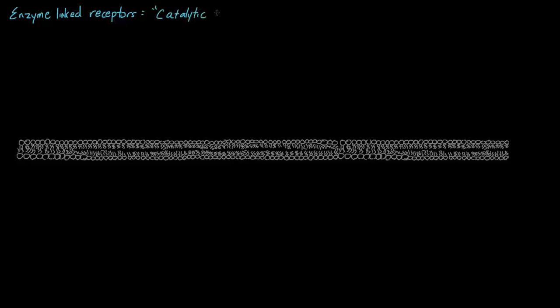So over here, I've pre-drawn a picture of our cell membrane — our phospholipid bilayer. Up top, I'm going to say this is our extracellular environment, and below is our intracellular environment. This is inside our cell, where our cytosol and all of our organelles are located.